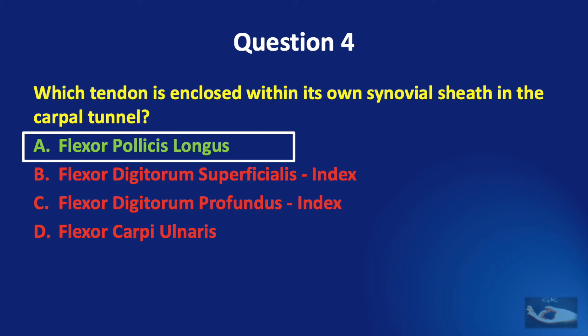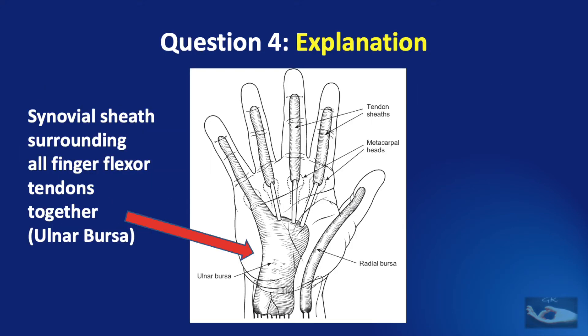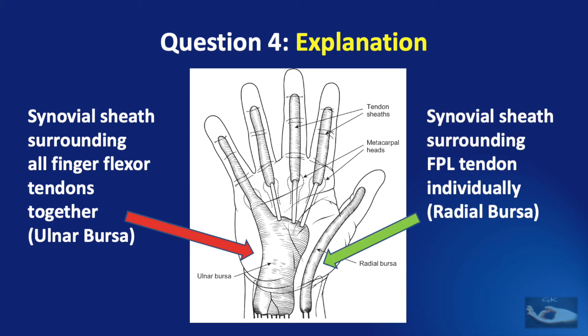The correct answer is flexor pollicis longus. There is a common synovial sheath surrounding all the finger flexor tendons together, known as the ulnar bursa, and there is an individual synovial sheath surrounding the flexor pollicis longus tendon, known as the radial bursa.